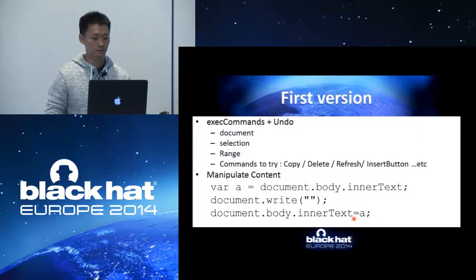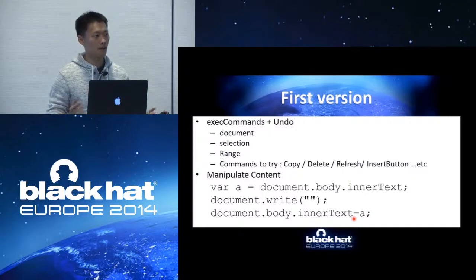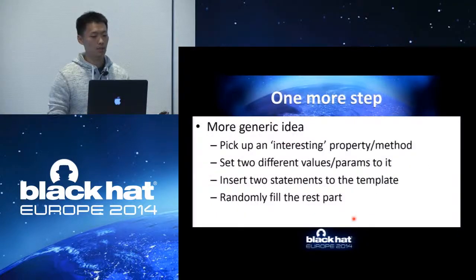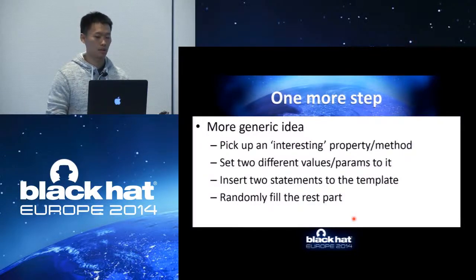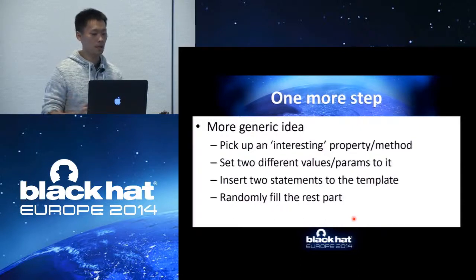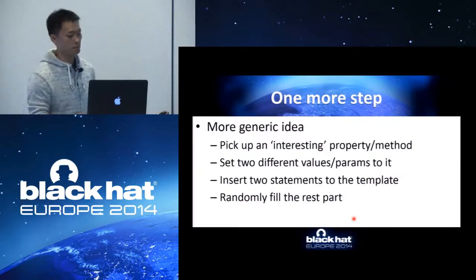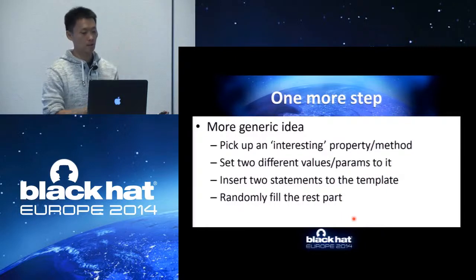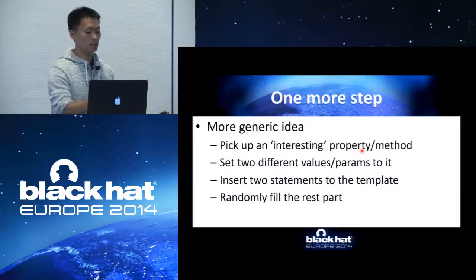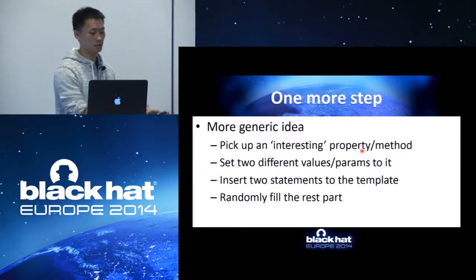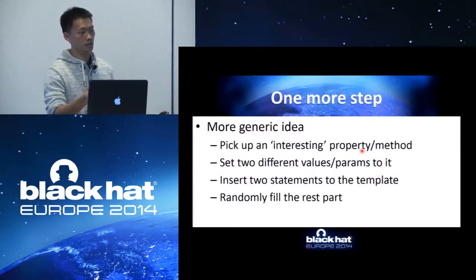That was the first version. Naturally, we expanded the pair concept and built a second version of the fuzzer. We simply went through the whole MSDN spec and picked up interesting properties and methods. For a property: assign it with value A, then assign it with value B — that's a pair. For a method: call it with parameter A, then parameter B — another pair. Or two methods doing contrary things — method A and method B — that's a third pair.